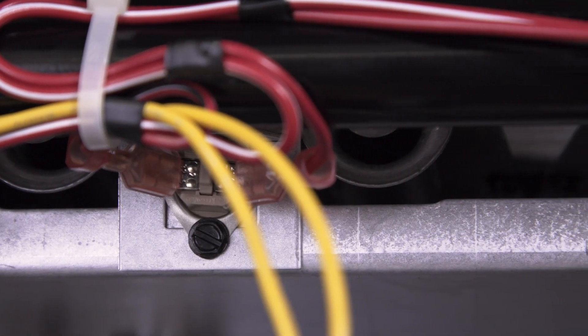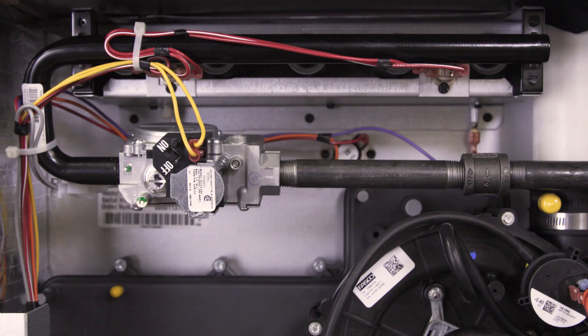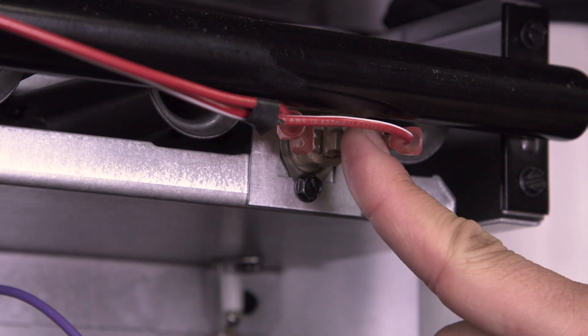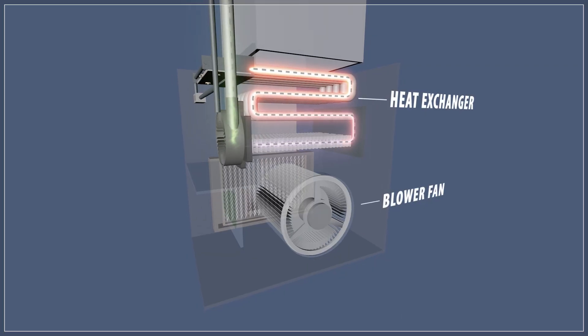Look for any scorch marks, as this indicates a more serious problem. If the flames roll out the front of the burner, the flame rollout switch shuts off the furnace. These switches usually have a reset button. If you reset the switch and the switch keeps tripping, then shut your furnace off and call a professional. The heat exchanger could be cracked and could be releasing carbon monoxide into your home.